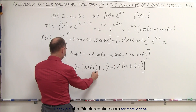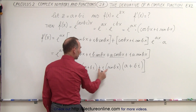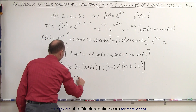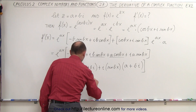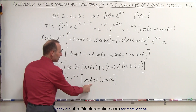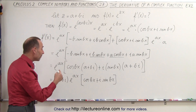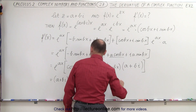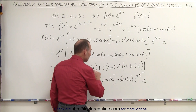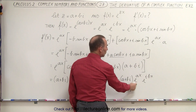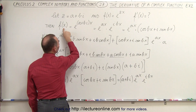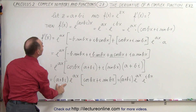Now I realize I have two terms — this plus this — and both of them have an a plus bi, which I can factor out. So this is equal to a plus bi, times e to the ax, and what we have left is cosine of bx plus i times sine of bx. And I realize that cosine of bx plus i times sine of bx can be written as e to the i·bx. So this becomes a plus bi, times e to the ax, times e to the i·bx. And e to the ax times e to the i·bx equals e to the (a plus bi)x, which equals e to the zx — the function we started with.